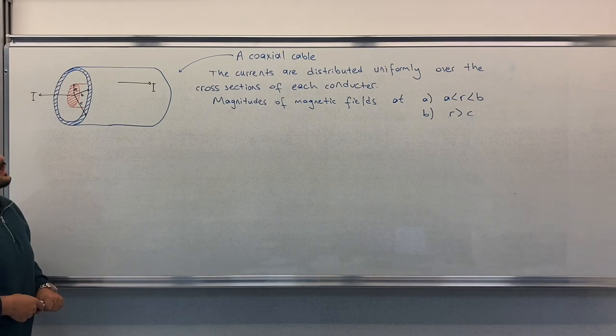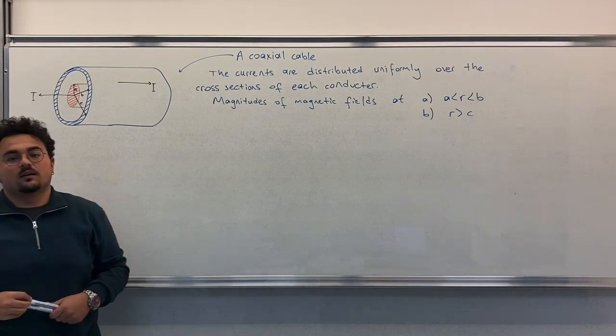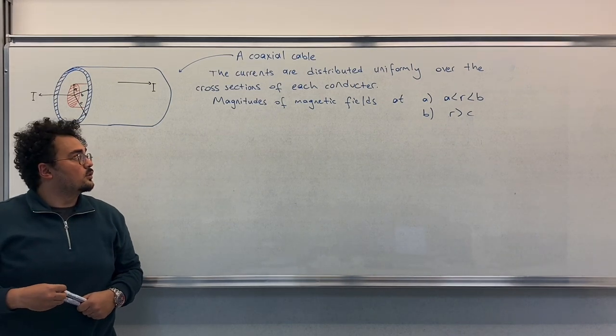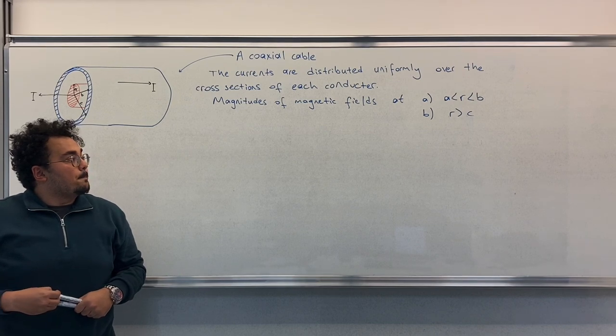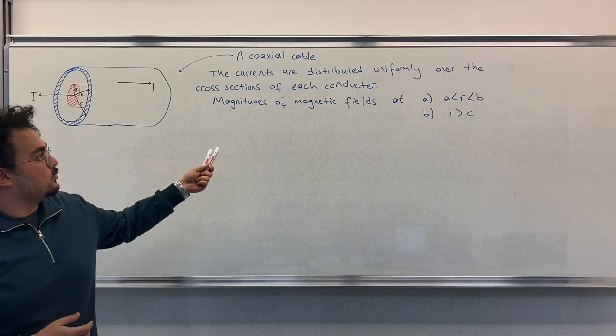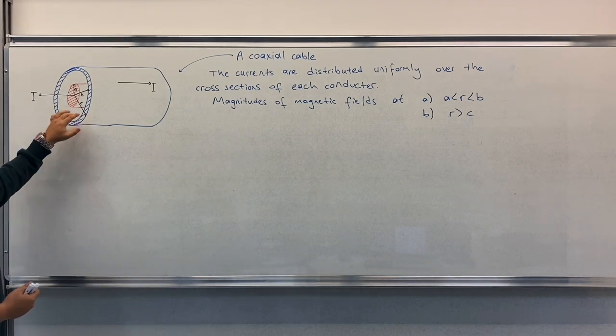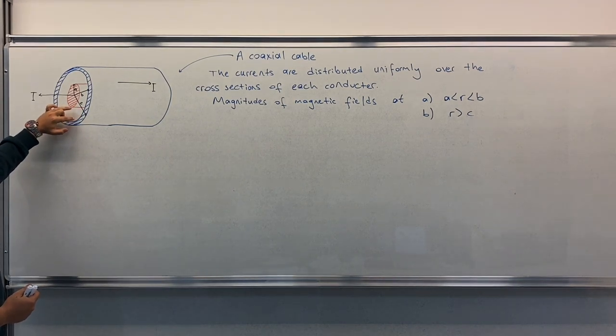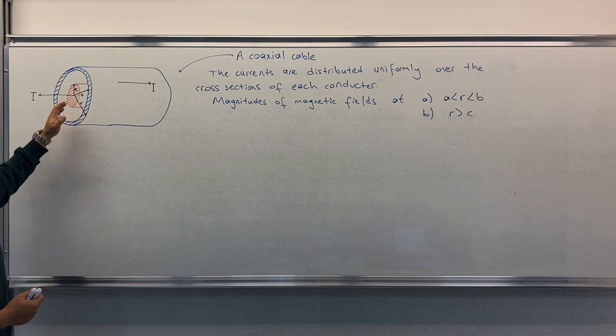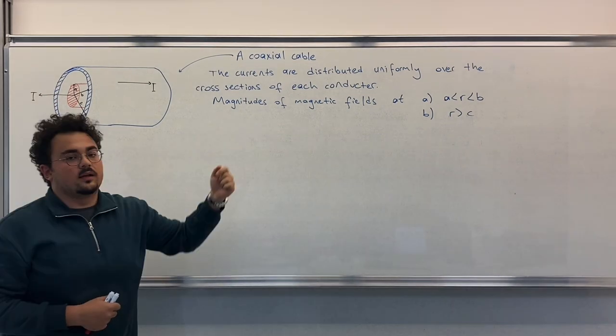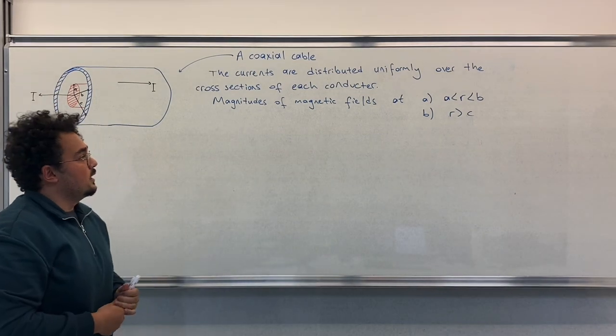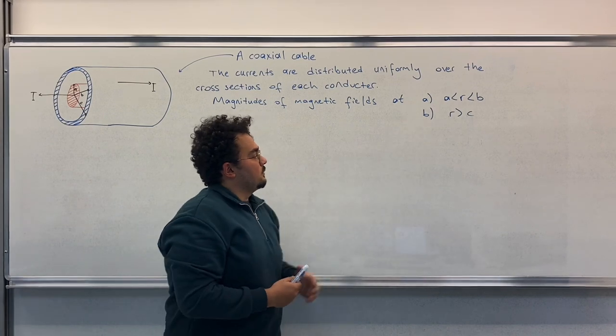This is important. The question wants us to find the magnetic fields, their magnitudes, for the area between the conductors and the outside, for R is bigger than C. I will start with this one for B.